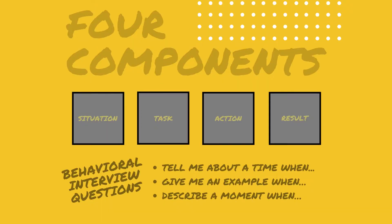The STAR method outlines four important components to include in any story when answering a behavioral interview question. These questions are used to find out what type of behavior you have used to handle a specific situation in your past experiences, because that can be a predictor of how you will handle similar situations in the future. They usually start with: tell me about a time when, give me an example when, or describe a moment when, and can best be answered by telling a story.